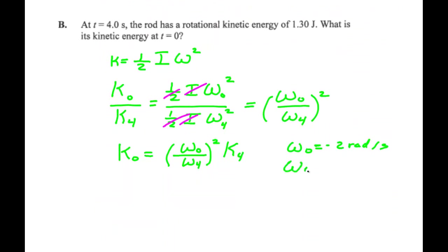Omega 4 is 4 radians per sec. And the kinetic energy at t equals 4 seconds, it tells me it's 1.30 joules. 1.30 joules. So, K0 is equal to minus 2 rad/s divided by 4 radians per second squared times 1.30 joules. The radians per second cancel.